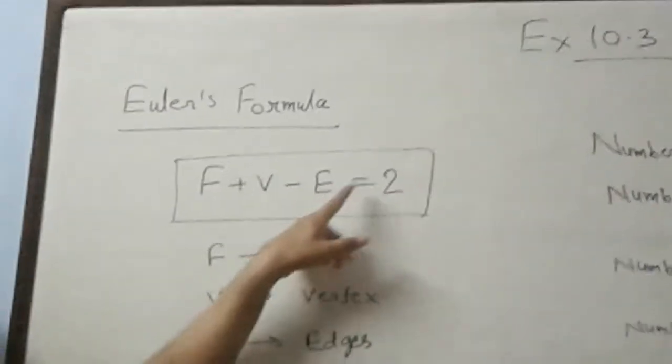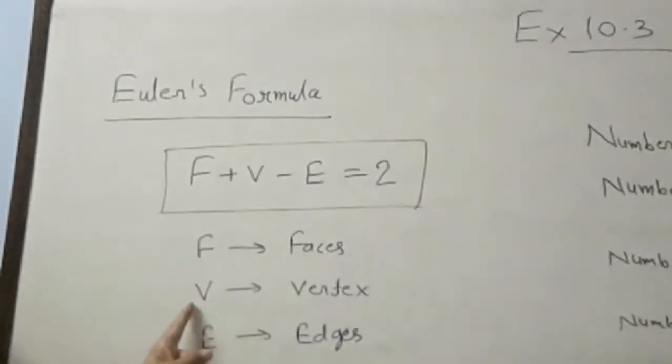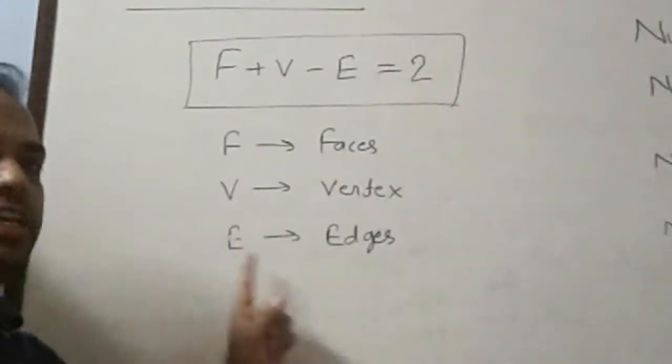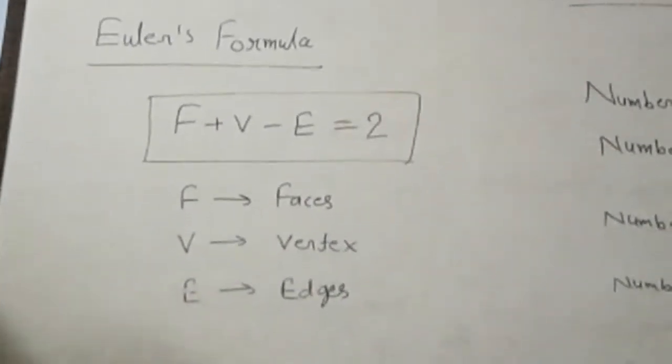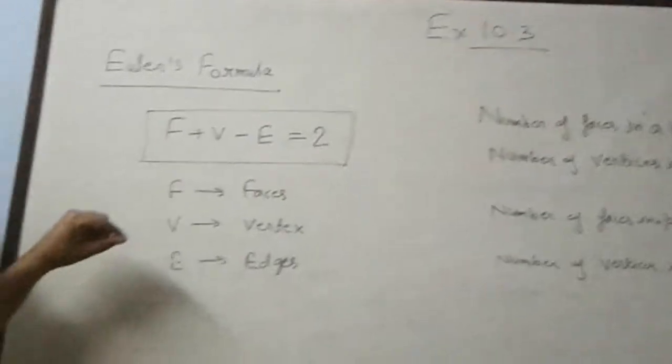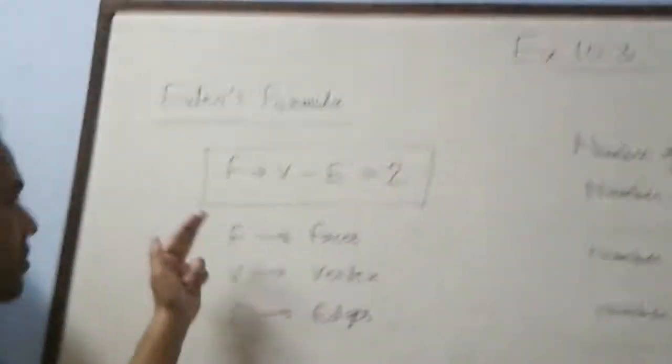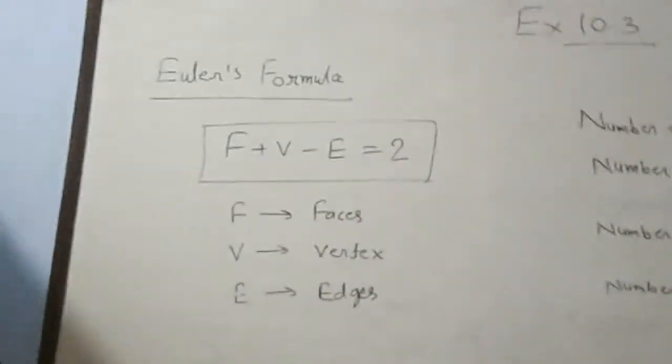First we will discuss Euler's formula. What is Euler's formula? Euler's formula is F plus V minus E is equal to 2, where F is faces, V is vertices, and E is edges of a solid.